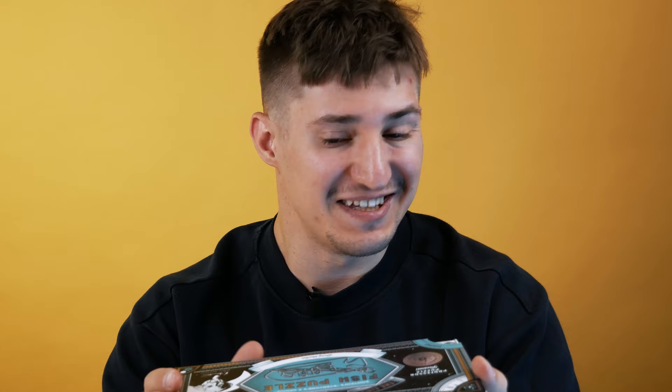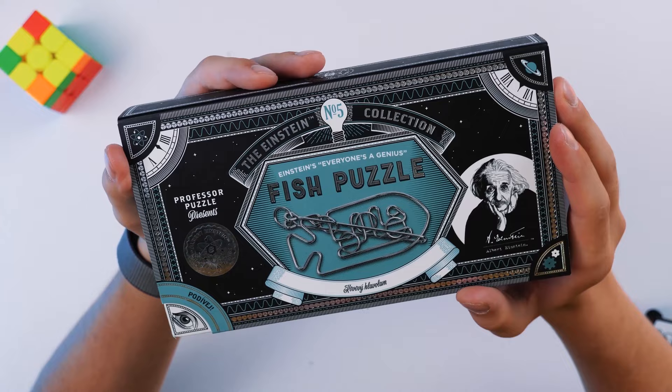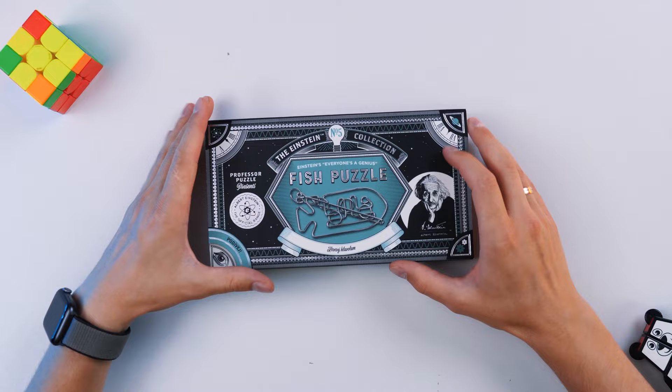But is this puzzle as complex as I would like it to be? I don't know, but let's read what we have here. This is a fish puzzle Einstein's Everyone is a genius. That doesn't mean anything to me, but I really want to see this puzzle.